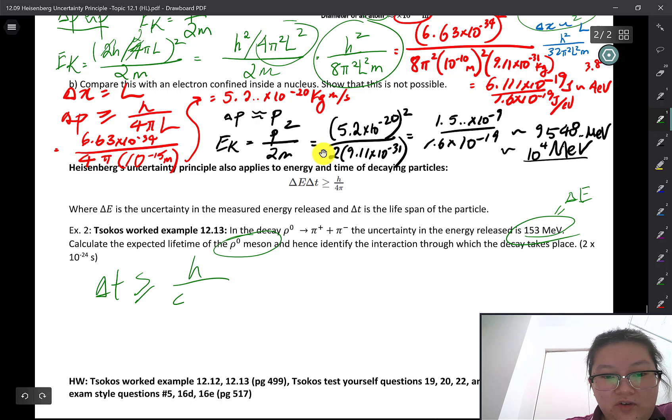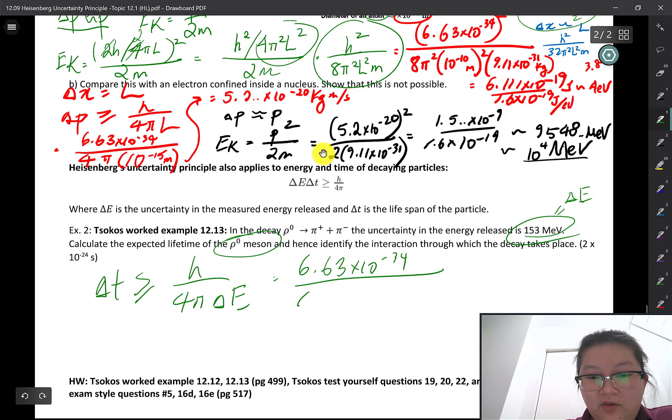This is H over 4π times delta E, which is the uncertainty in the energy, which is 6.63 times 10 to the power of negative 34 over 4π. And this uncertainty in energy is going to be 153 mega electron volts.